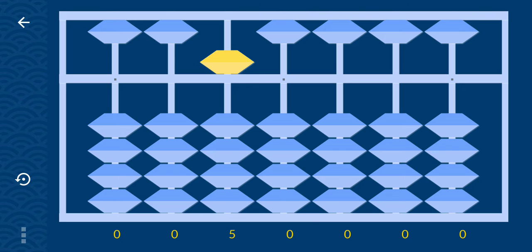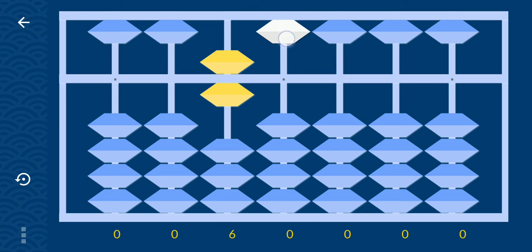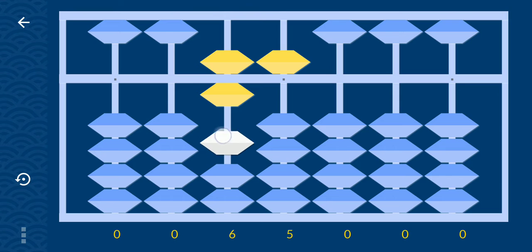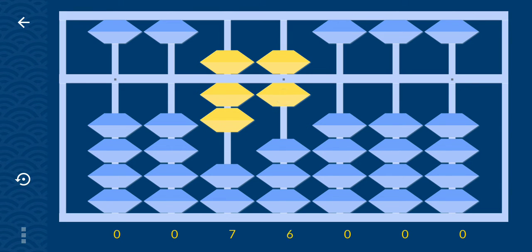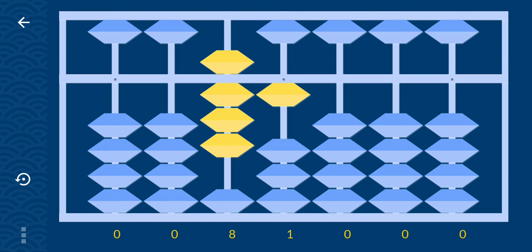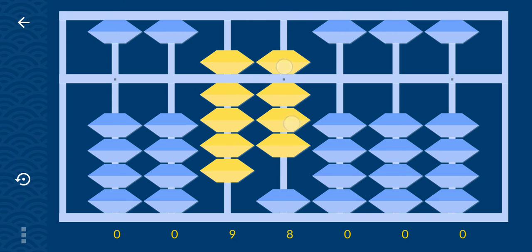Plus 15: direct plus 10, direct plus 5. Plus 16: direct plus 10, and to add 6 plus 1 minus 5 plus 10. Plus 17: direct plus 10, direct plus 7.